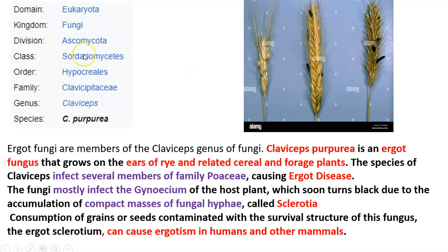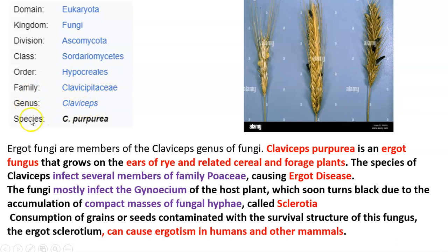Before starting, as always, let us see the systematic position. Domain: Eukarya. Kingdom: Fungi (Mycota). Phylum/Division: Ascomycota. Class: Sordariomycetes. Order: Hypocreales. Family: Clavicipitaceae. Genus: Claviceps. Species: the common species is Claviceps purpurea.